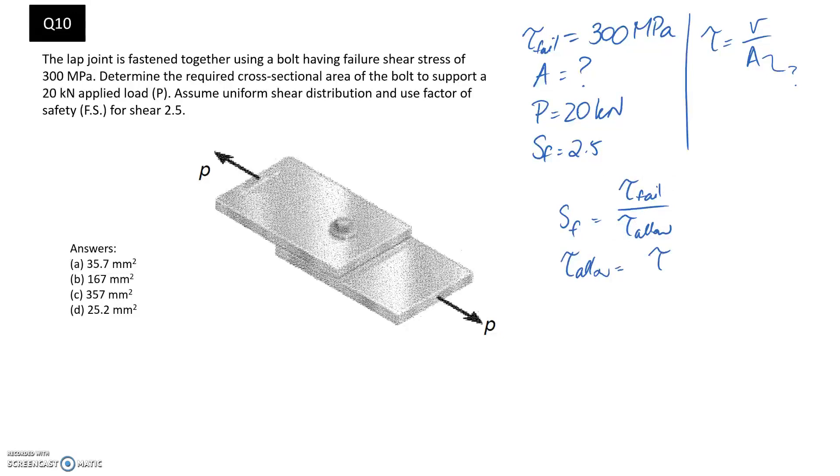and then substituting in, so it's going to be 300 divided by 2.5, and we find that we need an allowable of 120 megapascals.